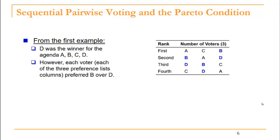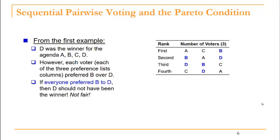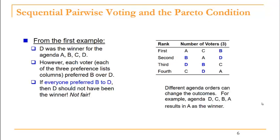In that first example, notice that every single one of our voters actually preferred B to candidate D. So if everyone prefers B to D, then D should not have been the winner — that's not a fair conclusion, and this is a drawback of the sequential pairwise method.